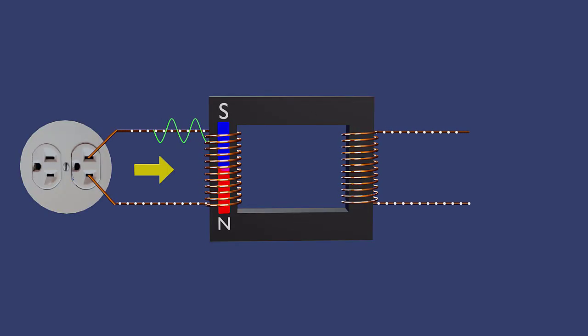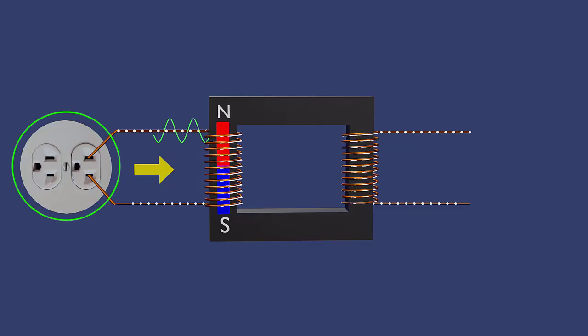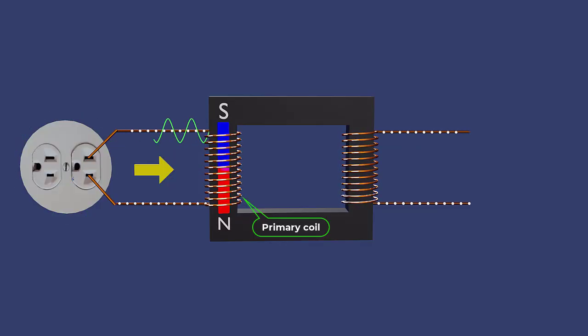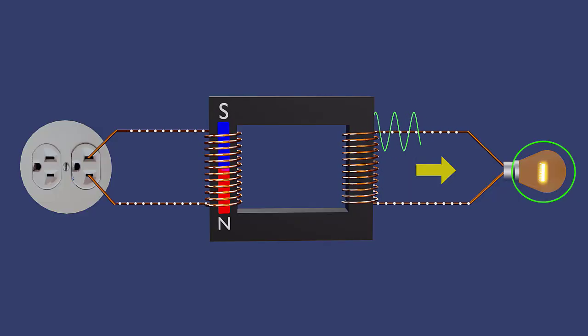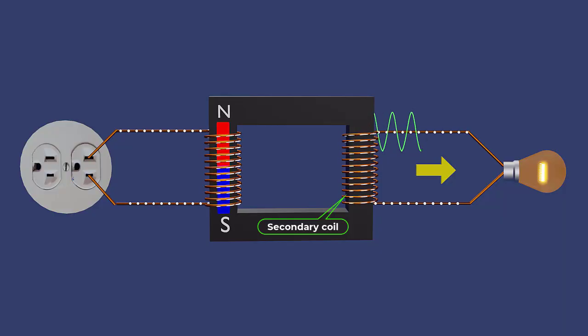The coil which receives the input voltage from a power source is called primary coil, while the coil which delivers the adjusted output voltage to a load, such as a light bulb, is called secondary coil.